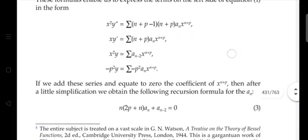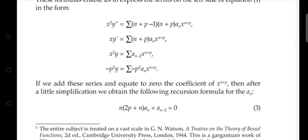Adding all series and equating to zero, the coefficient of x^(n+p) gives: Σ (n+p−1)(n+p) aₙ x^(n+p) + Σ (n+p) aₙ x^(n+p) + Σ a_(n−2) x^(n+p) − Σ p² aₙ x^(n+p) = 0.